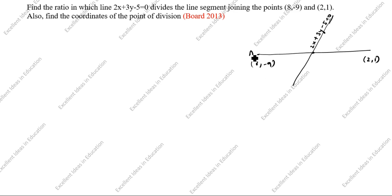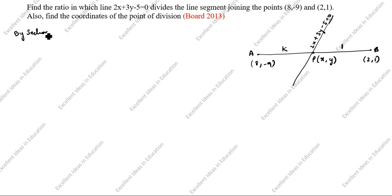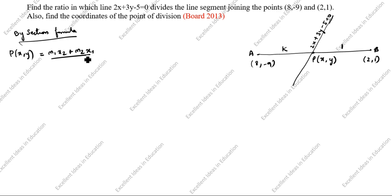Now we will write the names. This is A, this is B. We will take the dividing point as P. Since the ratio is not given in this question, we will take it as K to 1. So for the ratio, we use the section formula. By section formula: P of x comma y equals m1·x2 plus m2·x1 divided by m1 plus m2, comma m1·y2 plus m2·y1 divided by m1 plus m2.